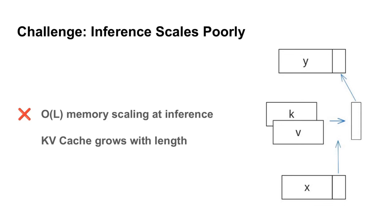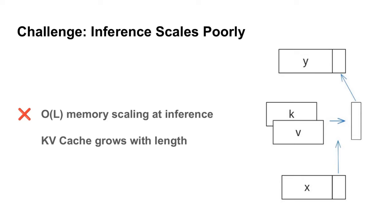Specifically in this diagram, when processing a sequence x, we have to store vector values k and v for every previous position.